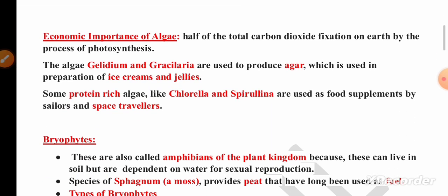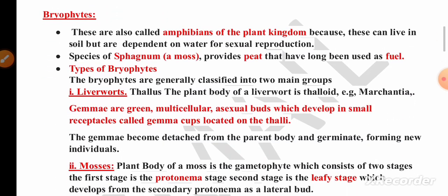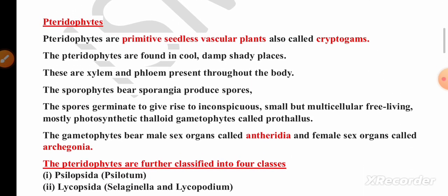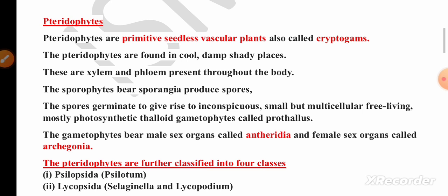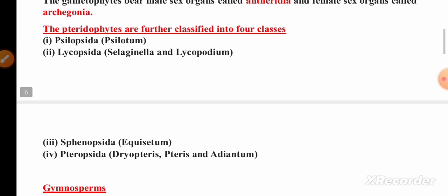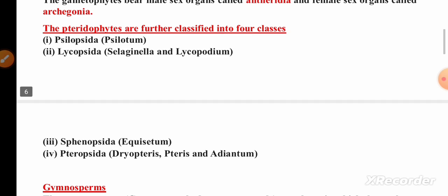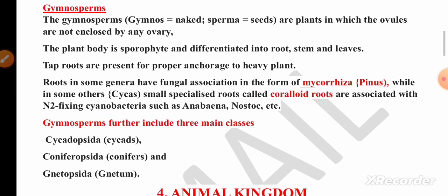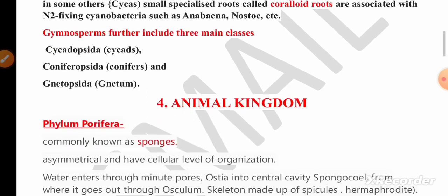From the third chapter, Plant Kingdom, remember the economic importance of algae — very important. For five marks, remember the characteristic features of bryophytes and why they are called amphibians of the plant kingdom. Remember about gemma cups. Also remember five points about pteridophytes — they are called cryptogams — and the classification of four classes of pteridophytes with examples.